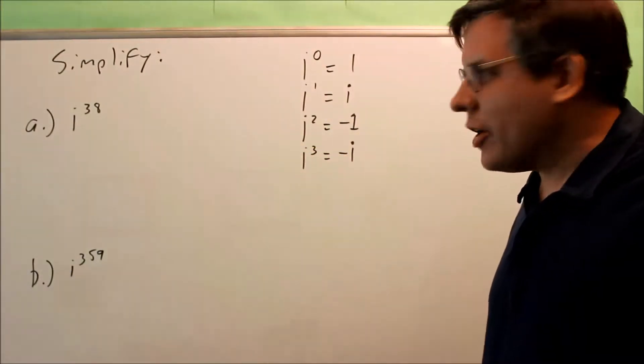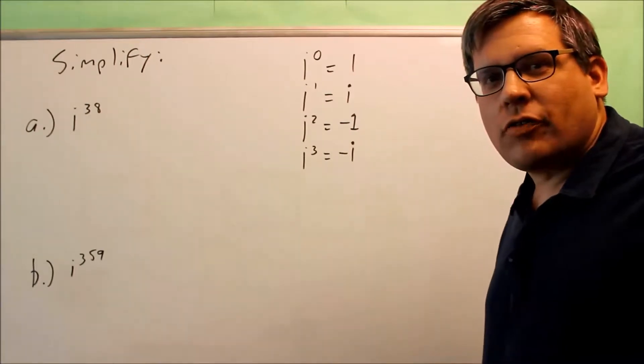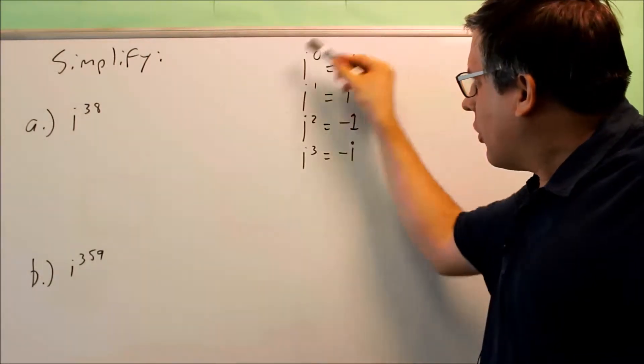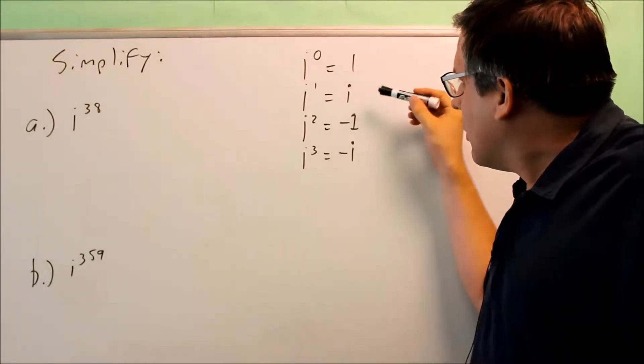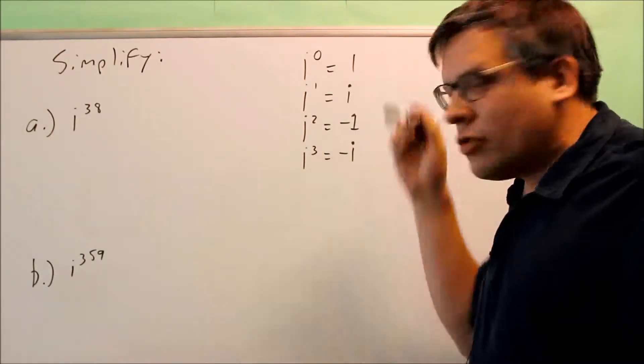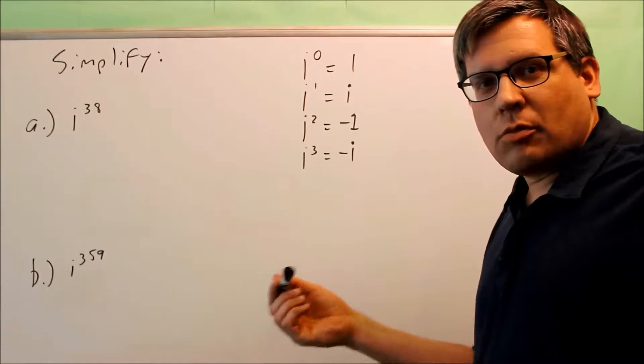We want to simplify i to the 38th power and i to the 359th power. The thing you have to know about i in this section is that i is equal to the square root of negative 1. So we're talking about imaginary numbers here.